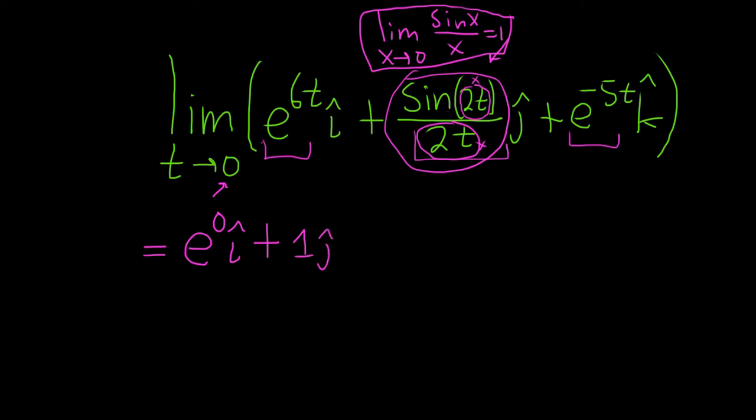You can also use L'Hopital's rule because it's 0 over 0, but this is a little bit faster. Plus e to the negative 5 times 0, so that'll just be e to the 0 k-hat. e to the 0 is 1, so this will just be i-hat plus j-hat plus k-hat.